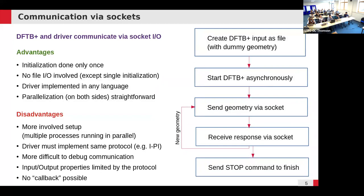Now let's leave file-based communication. To spare the reinitialization every time, one strategy is socket communication. Two processes run simultaneously and exchange data with each other — whether INET sockets or file sockets. The key point is that data is exchanged without writing files. Currently the so-called i-PI protocol is implemented in DFTB+, and you will have a hands-on exercise driving DFTB+ via i-PI sockets.